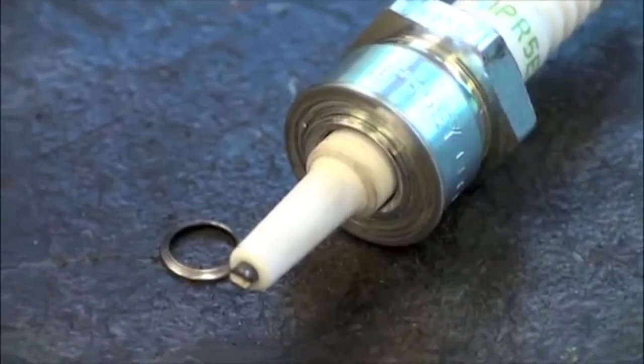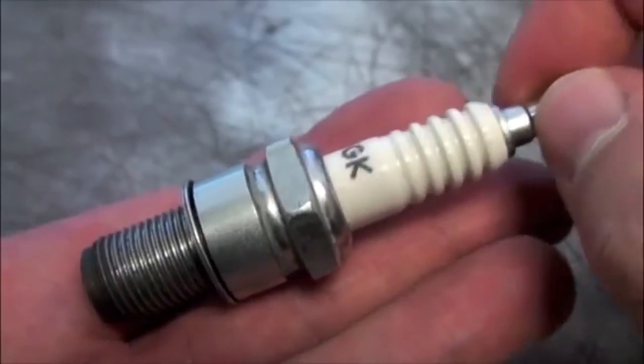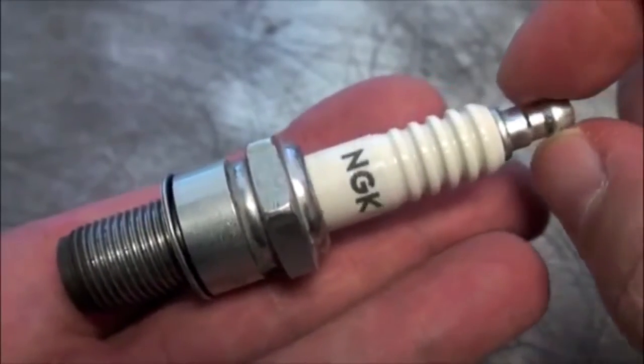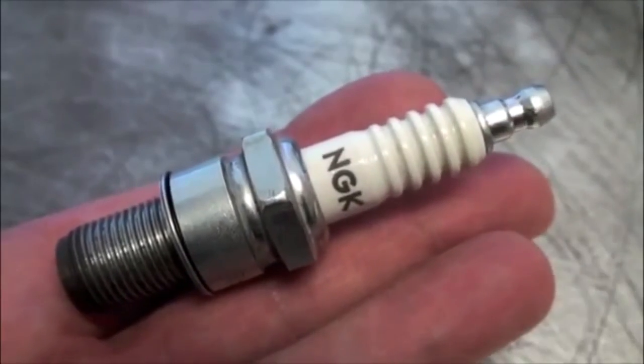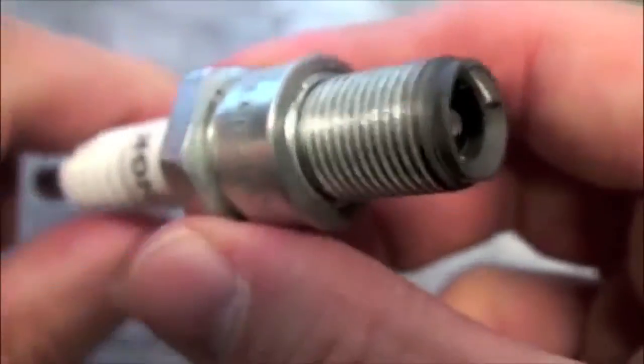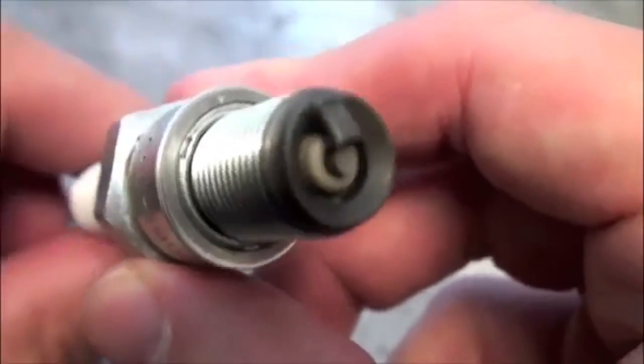Another possible problem is internal seal damage to the spark plug. If this happens, the ceramic insulator will separate from the metal shell. This condition may not occur until the vehicle is driven and the spark plug is subjected to combustion pressure.